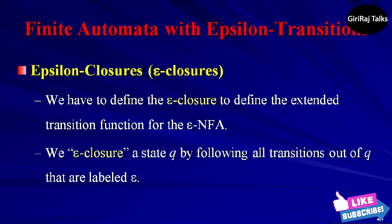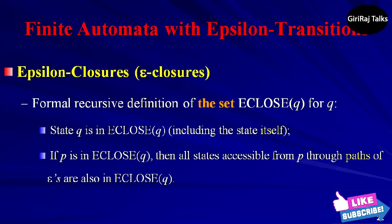Informally, we epsilon close a state Q by following all transitions out of Q that are labeled epsilon. However, when we get to other states by following epsilon, we follow the epsilon transitions out of those states and so on, eventually finding every state that can be reached from Q along any path whose arcs are labeled epsilon.